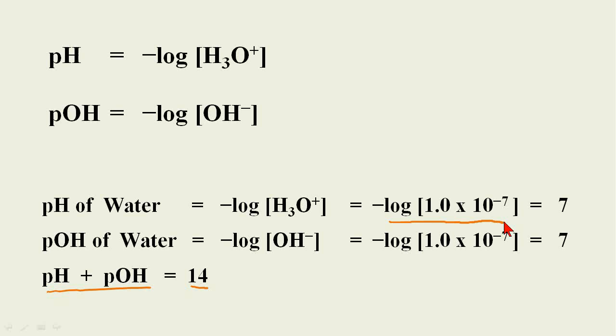Let's do the math here. The log of 1.0 times 10 to the minus 7 equals 7, and the log of the hydroxide concentration is also 7. So 7 plus 7 equals 14.